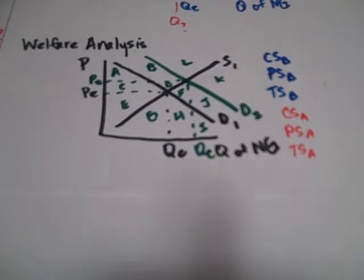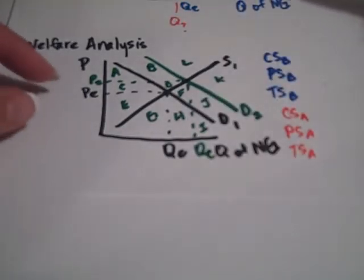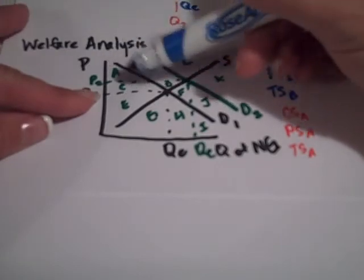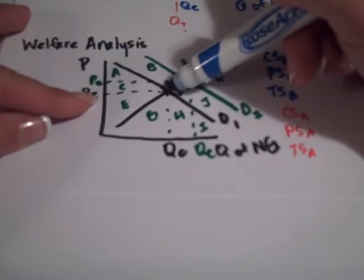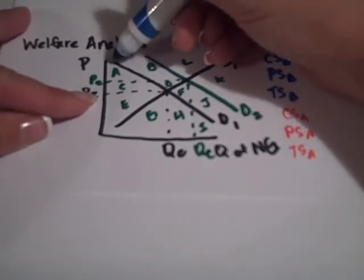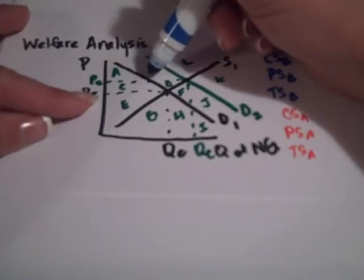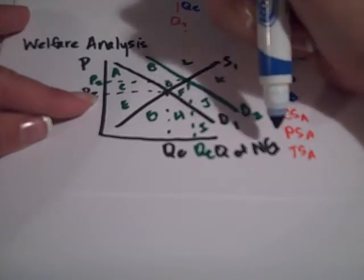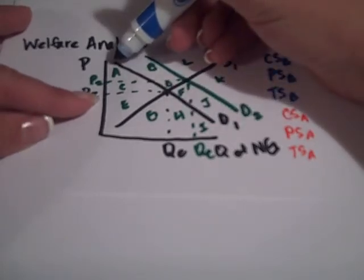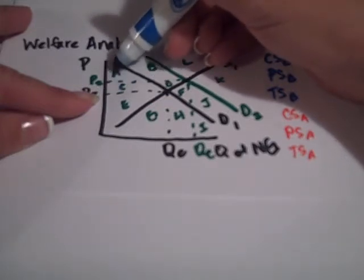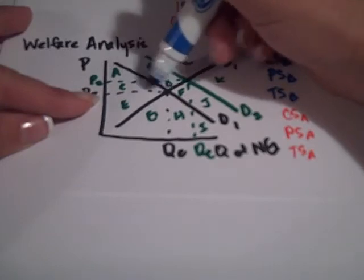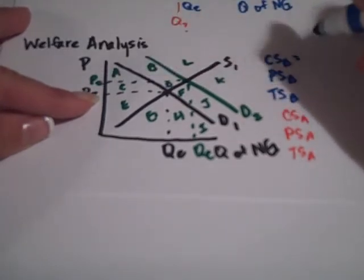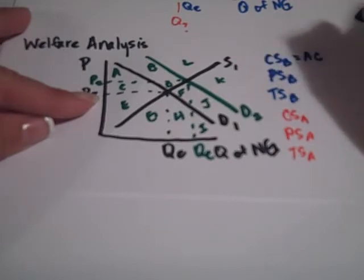Consumer surplus is defined as the area below the demand curve and above the price, because these are all the individuals that were better off by participating. The price was here at this level, established by the equilibrium, but this individual here, if you think of this as individual, collective, or the sum of all the individuals that are willing and able to participate in the market for natural gas, they were going to pay a very high price for their natural gas. They benefited by the distance between this price and this price. So we want the area below the demand curve and above the price. So before, the answer would be the area of A, C.